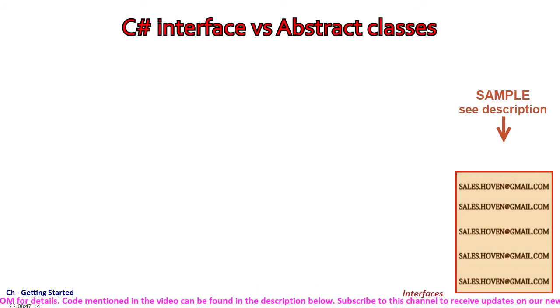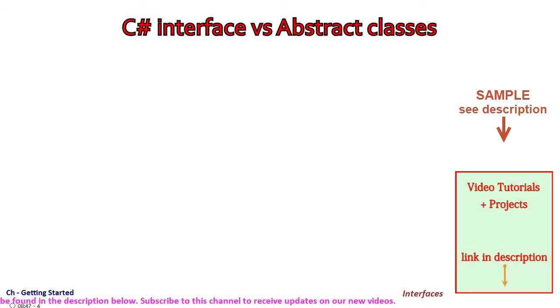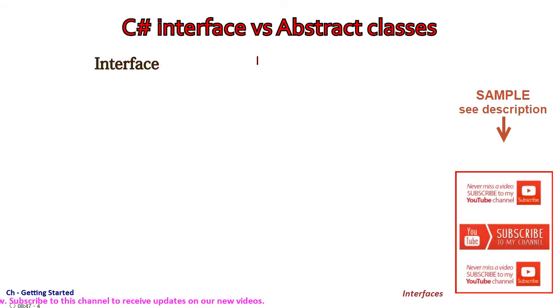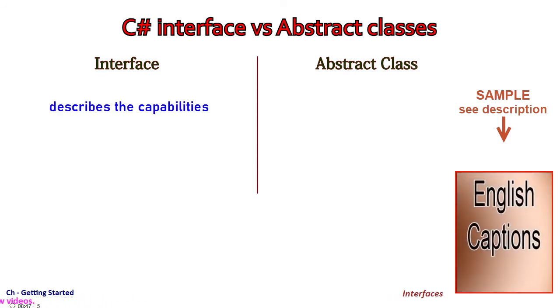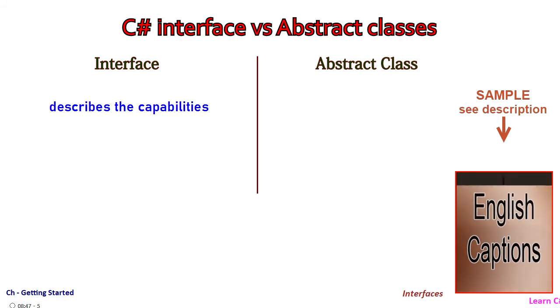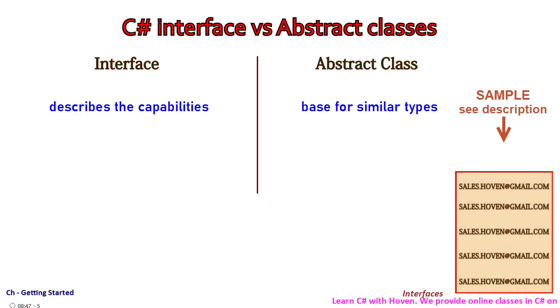And now let's see a comparison between C-Sharp interface and abstract classes. There is so much common between an interface and an abstract class that makes it imperative to learn the differences between the two. Firstly, an interface describes the capabilities of the implementing class, but an abstract base class is a building base for similar types of classes.